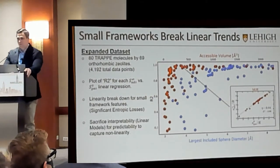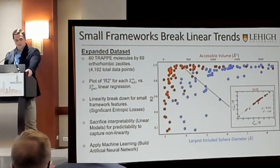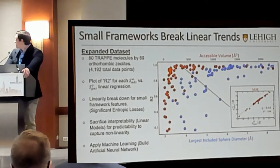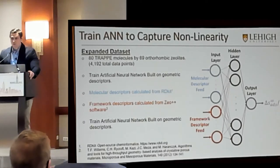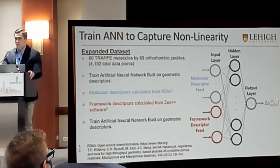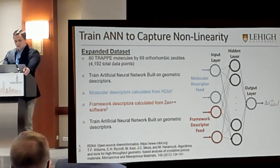To encapsulate all of this non-linearity, our approach was to use machine learning. Specifically, we built an artificial neural network that captured this non-linearity, and then we performed a sensitivity analysis to understand which descriptors were most significant. Our ANN consisted of an input that included molecular descriptors shown in blue, as well as framework descriptors shown in red. Our molecular descriptors were taken from RDKit, and our framework descriptors were calculated from Zeo++. Our output was a single value — the delta S entropy calculated from our Monte Carlo simulations.